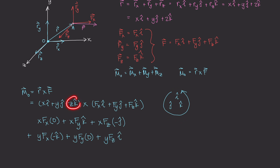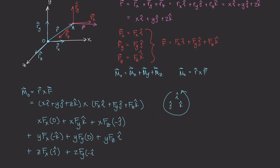Finally for the z component: z·fx times (k × i) = +j; z·fy times (k × j) = −i; z·fz times (k × k) = 0. So there are three terms that go to zero, and we can now simplify by collecting the remaining terms.